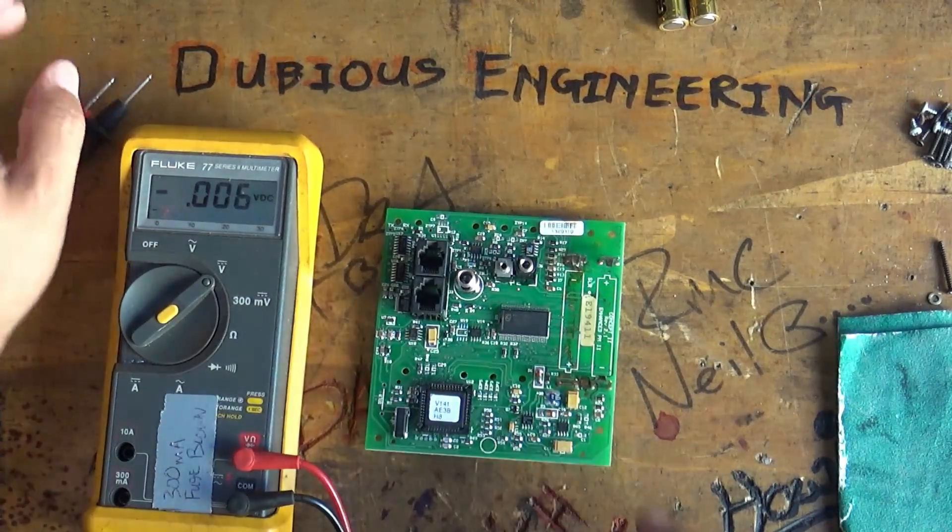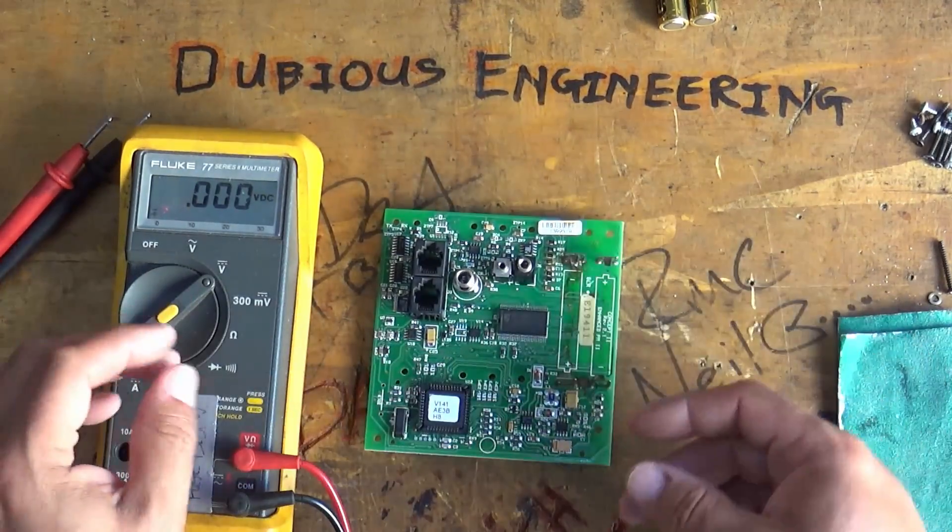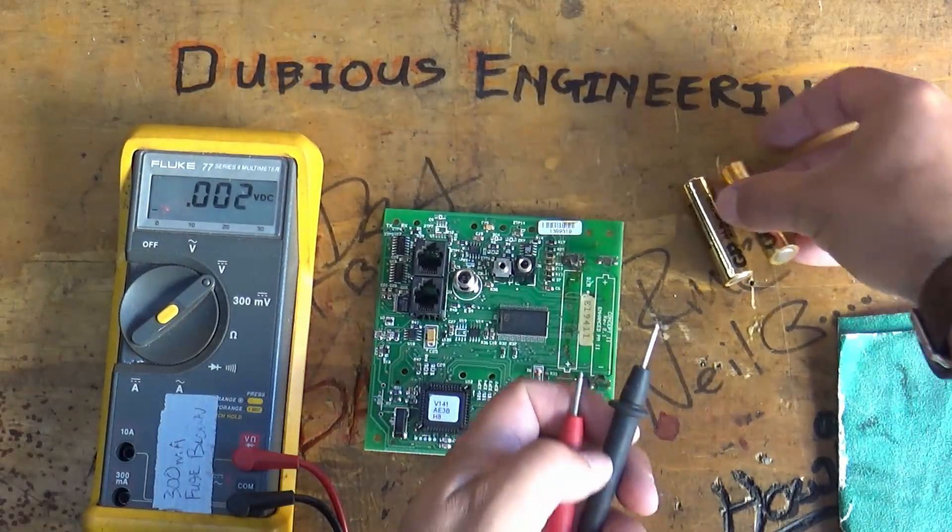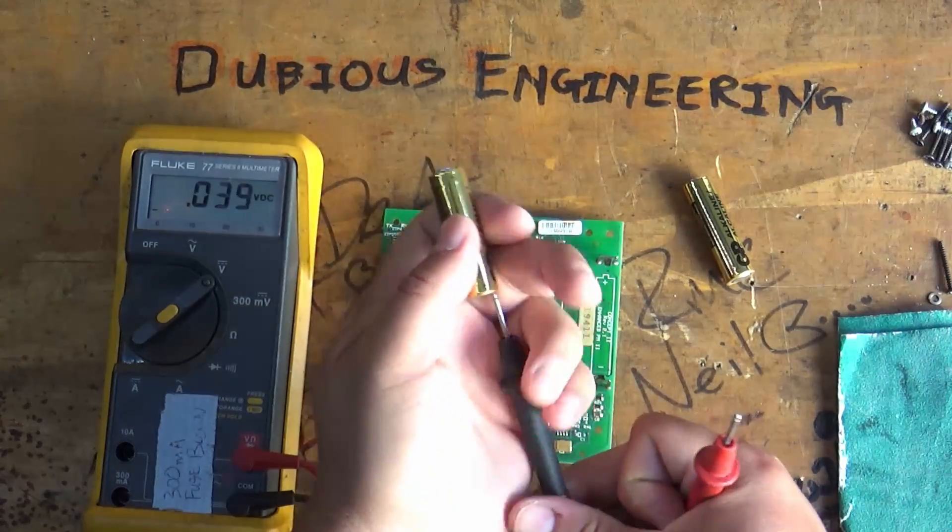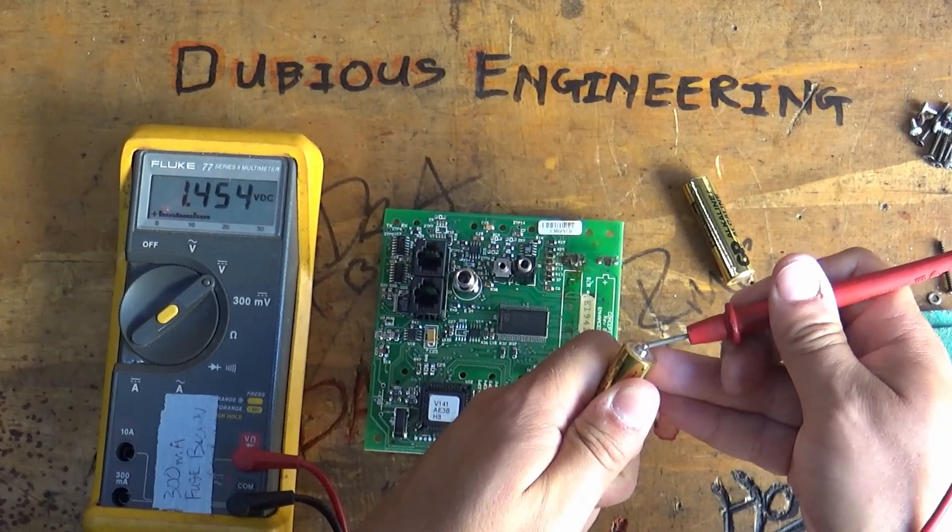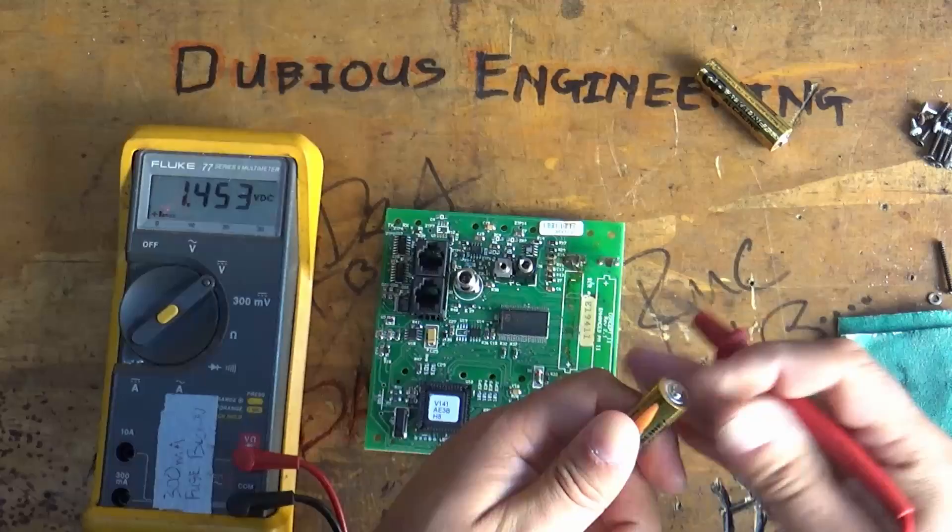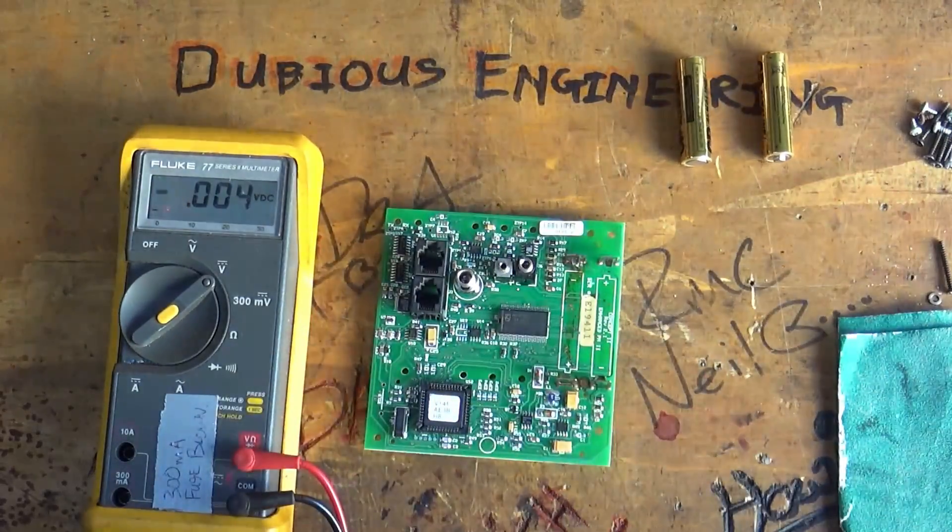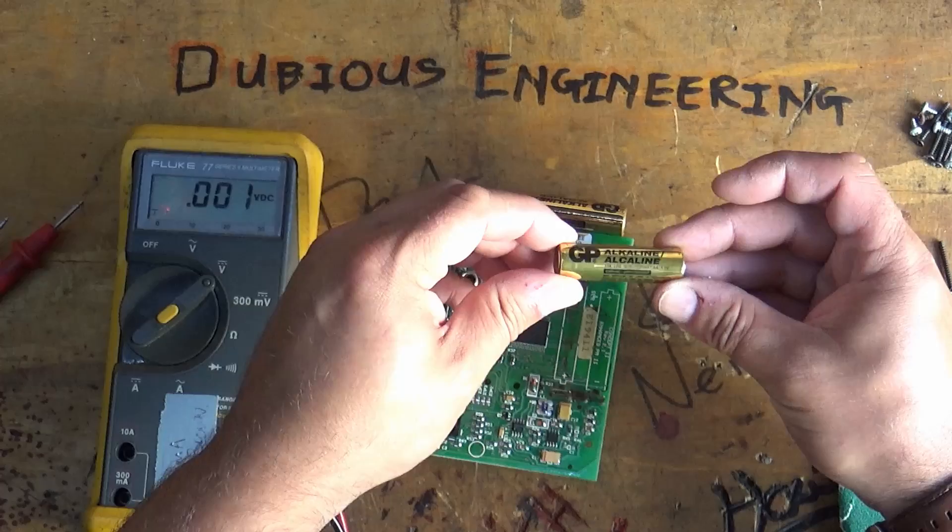This guy here which is quite messy where are we at let's have a look 0.7 volts so not particularly good. Right I'm going to continue working on trying to clean up these contacts and then we'll pop a couple of batteries in and see what happens. Let's just check these batteries that I've selected as potential candidates 1.4 that's not bad and this guy is 1.4 that should do the trick okay these are alkaline batteries.